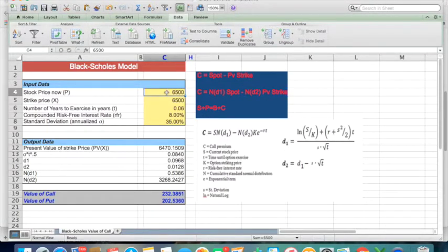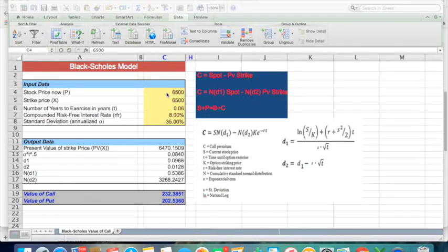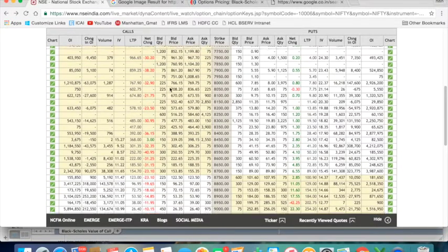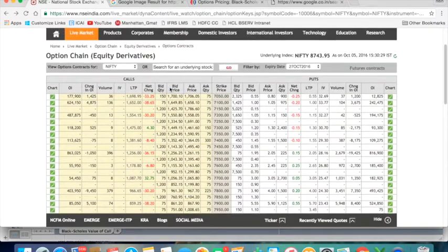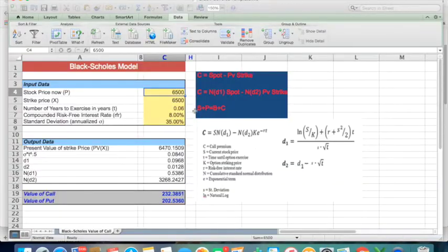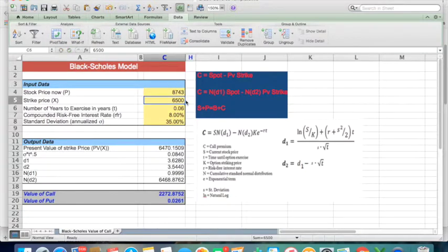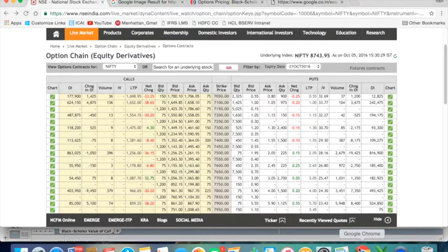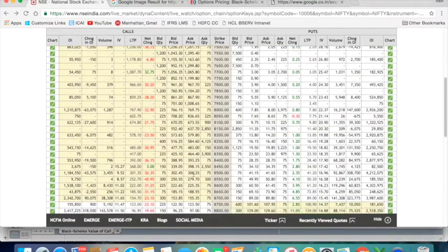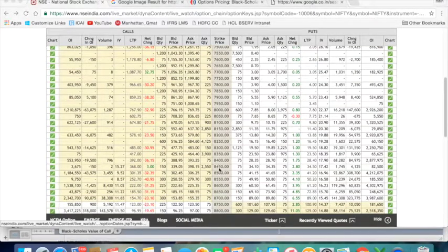Let's start with some real figures which are available on NSE of India. Let's take an example of Nifty, which is trading at 8743. Let's put in the value 8743, then let's take a call option with a strike price of 8450.